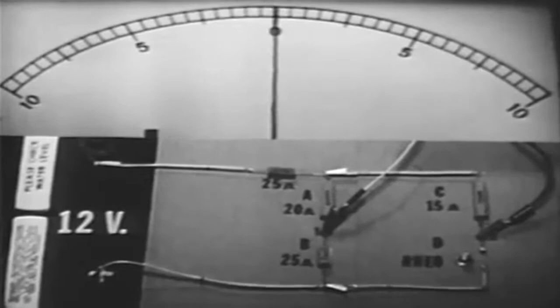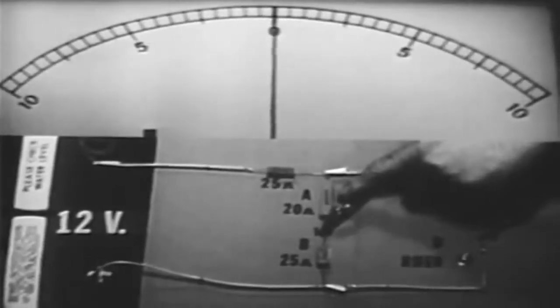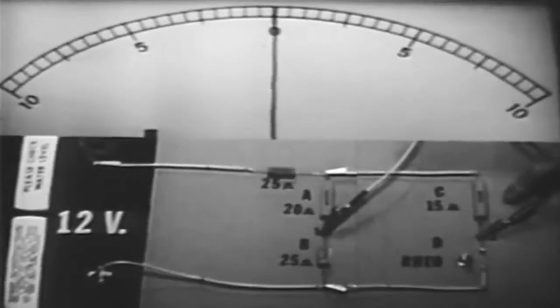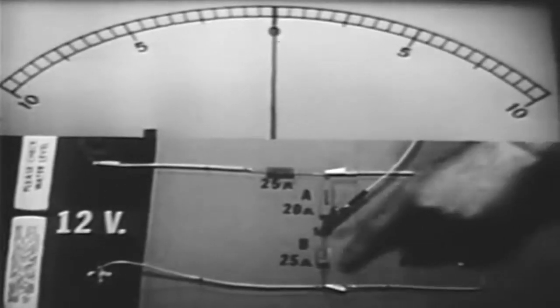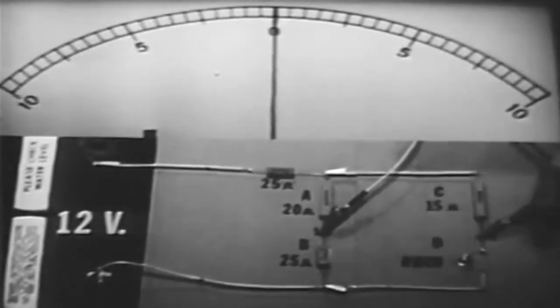This circuit is now a resistive bridge. Since points 1 and 2 are at the same potential, we have a balanced condition. Voltage A is the same as voltage C, and voltage B is the same as voltage D.